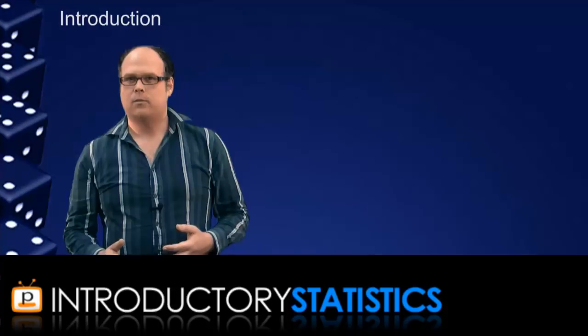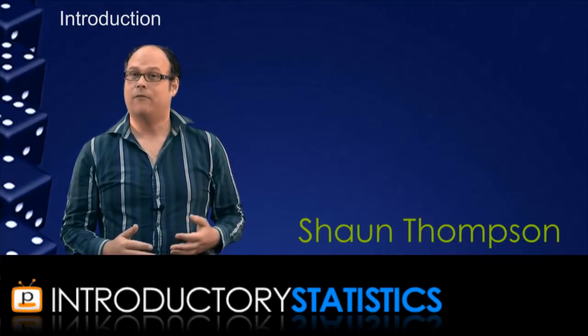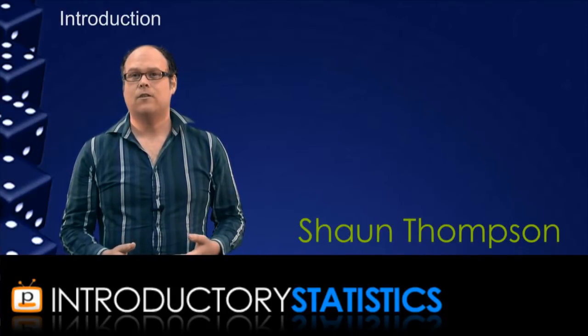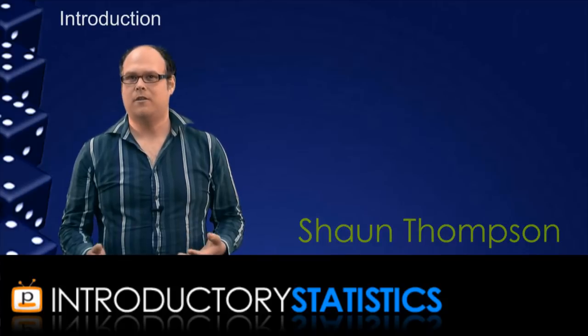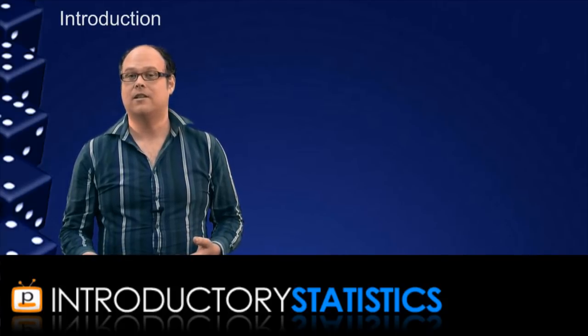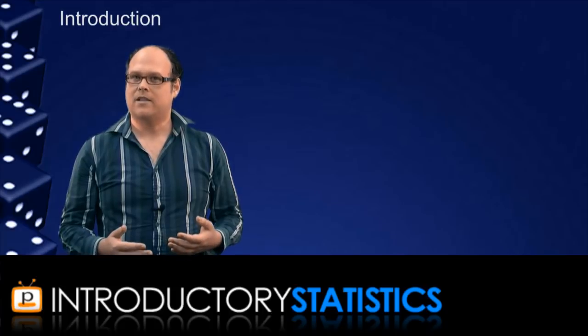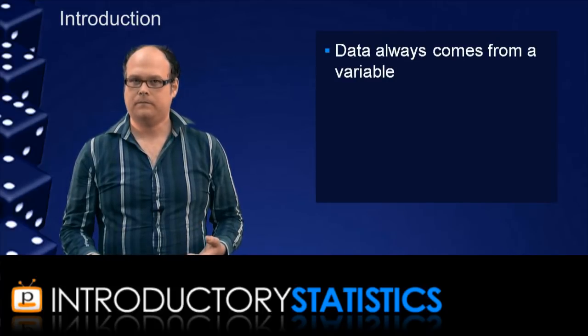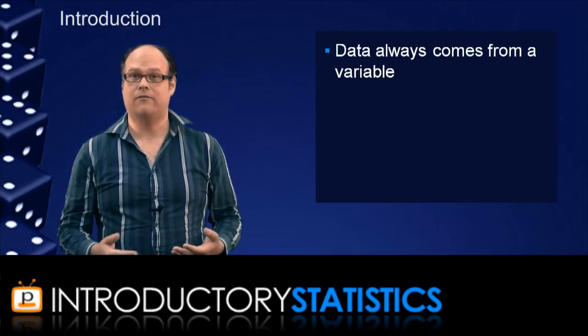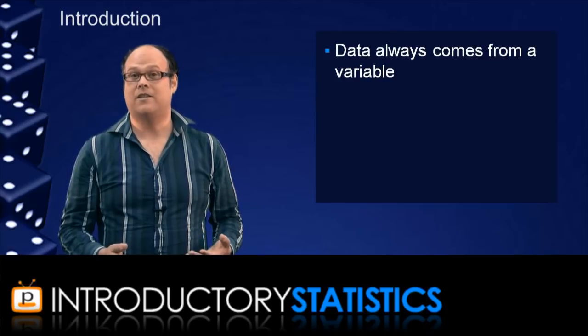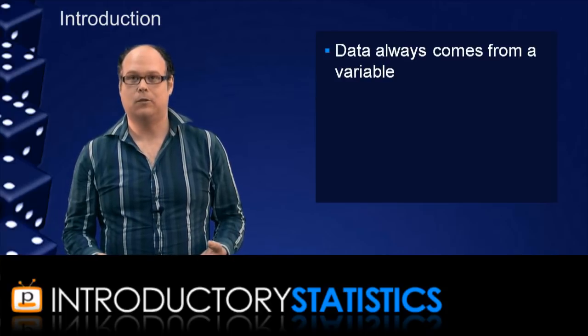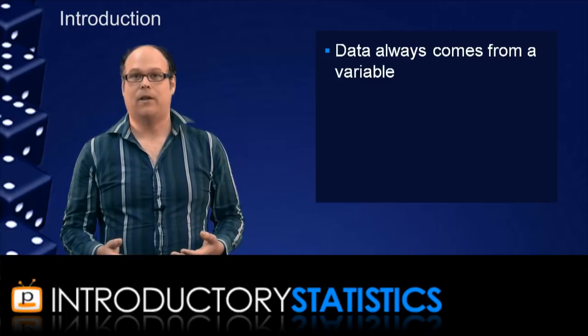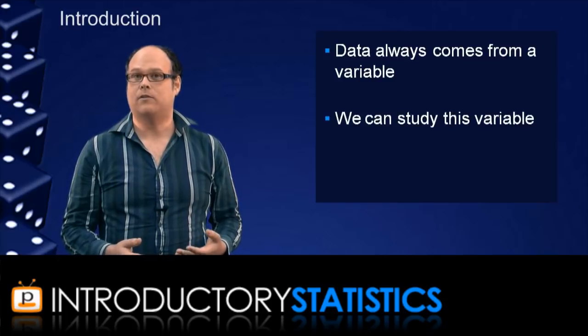Now, the first few summaries were all about data, data that have already been collected. And of course, we can talk about how such data are distributed by showing some charts or by measuring an average and so on. But this data will always come from a variable. And to start exploring statistical inference, which is where we try to use statistics to actually say something about the world, we're going to have to focus on more than just data. We're going to have to study the underlying variable too.